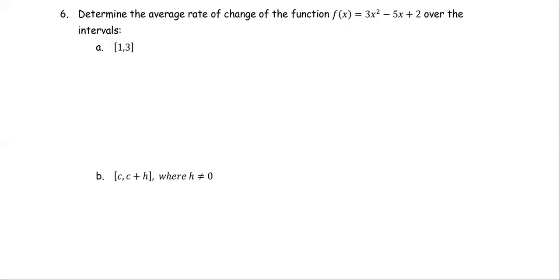In this example, we are going to determine the average rate of change of the function f(x) = 3x² - 5x + 2 over the given intervals. For the first one, part a, the interval is given from 1 to 3.